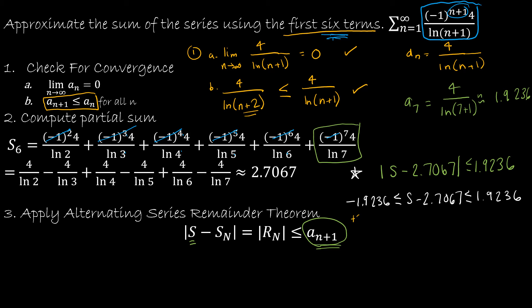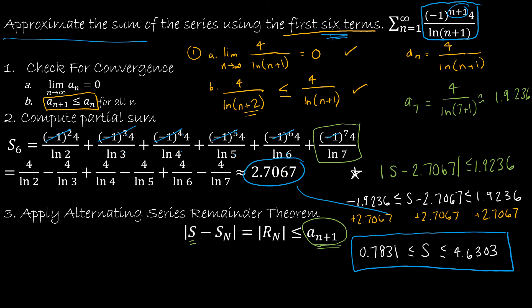Of course, from here, I can just add 2.7067 everywhere because I want the middle value to just be S. And so that leaves me with the result of 0.7831 is less than or equal to S is less than or equal to 4.6303. The question at the beginning said approximate the sum. And that is what I have done. So based on the information that I have gathered, I know that the true sum is going to be between 0.7831 and 4.6303. Obviously, I have found a little bit of information for the partial sum, and that does fall between those two values.